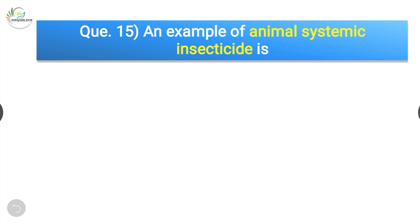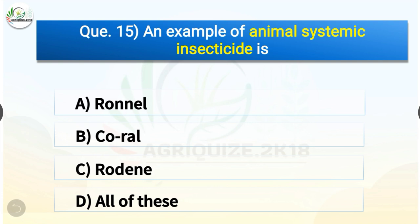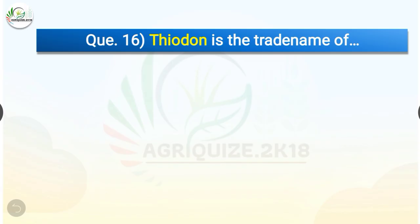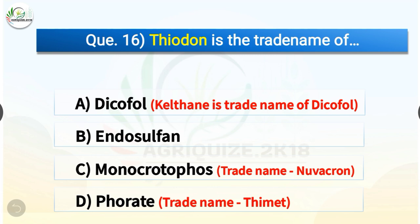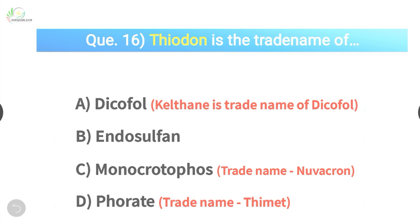Question number fifteen: an example of animal systemic insecticide is — options are Ronnel, Coral, Ruelene, or all of these. The correct answer is option D, all of these. Question number sixteen: Thiodan is the trade name of — options are dicofol or endosulfan. The correct answer is option B, endosulfan. Thiodan is the trade name of endosulfan, whereas Kelthane is the trade name of dicofol, Nuvacron is for monocrotophos, and Thimet is for phorate.